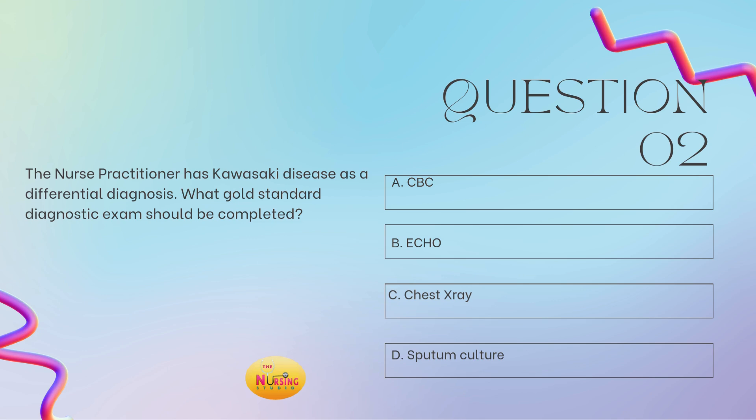The stem of the question states: what gold standard diagnostic exam should be completed? Remember, with Kawasaki disease, you want to make sure that you do B — obtain an echo — because vasculitis is a common issue that you want to rule out and stay on top of when you have a Kawasaki diagnosis. So make sure you get your echoes. B is your answer.